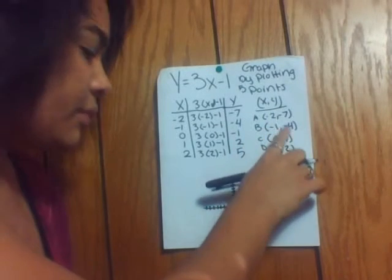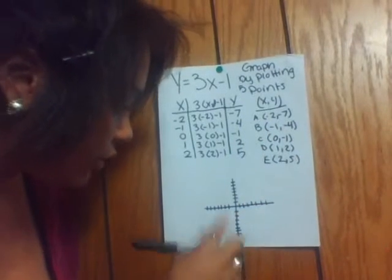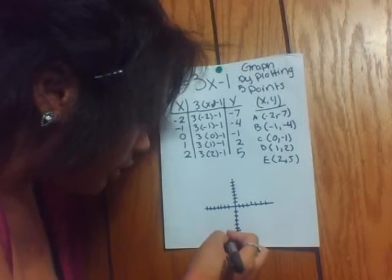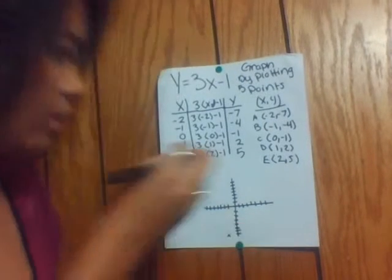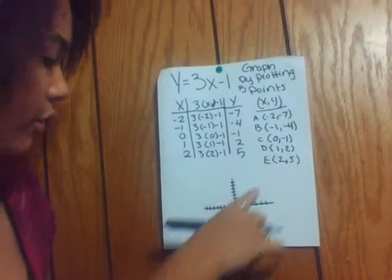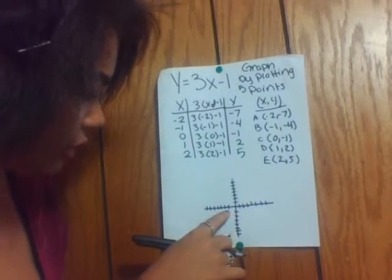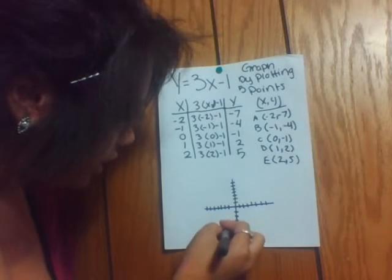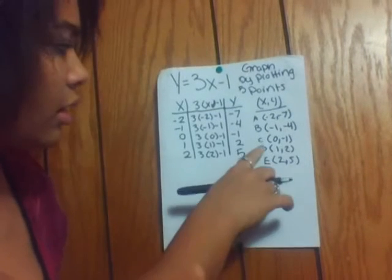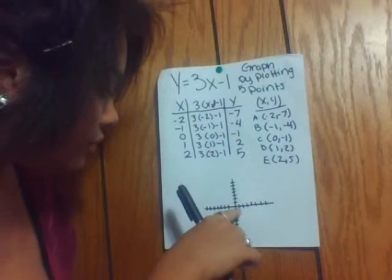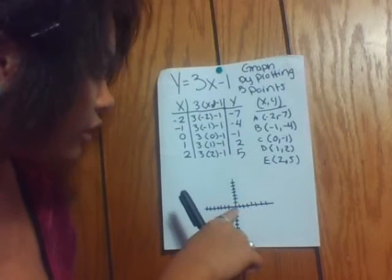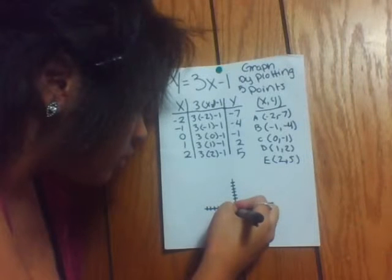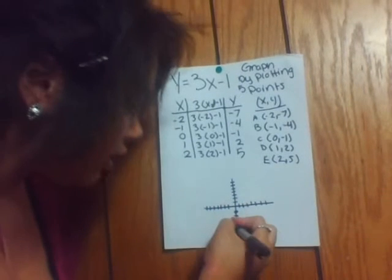So negative 2, negative 7: you go over 2, go down 7. That's point A. Then negative 1, negative 4: go over negative 1, go down 4. That's point B. Then 0, negative 1: go down 1. I'll make it kind of big so you can see it. That's point C.